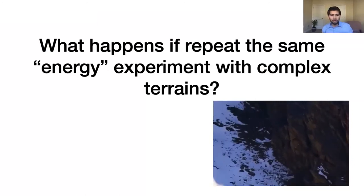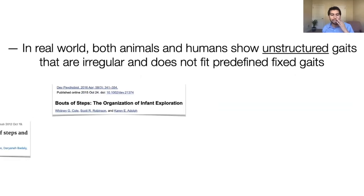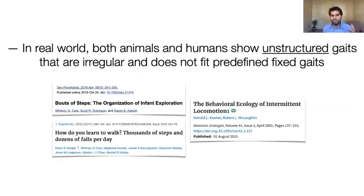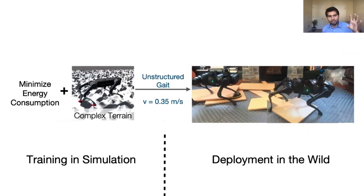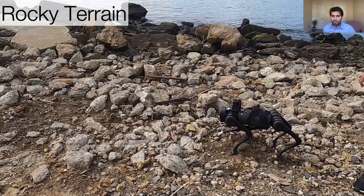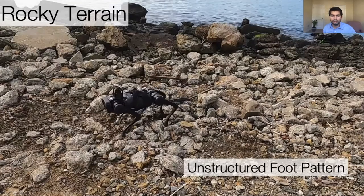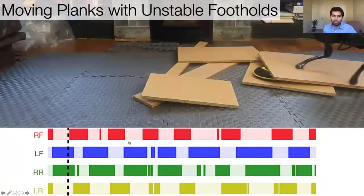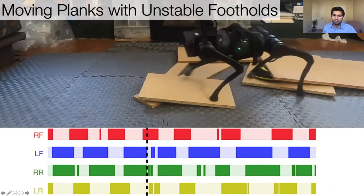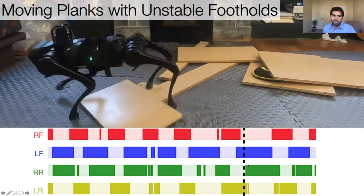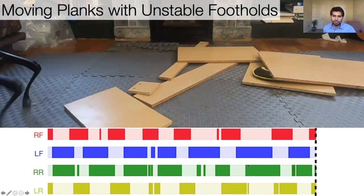When we repeat the same procedure on complex terrain, as expected, the gates become unstructured. Using the same architecture, gates are unstructured at any speed — no walk, trot, or bounce structure — consistent with observations of animals on complex terrain.